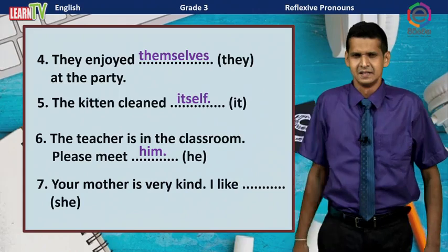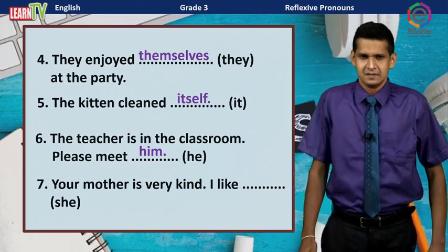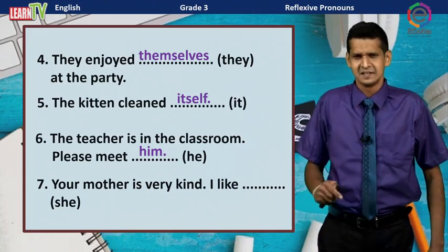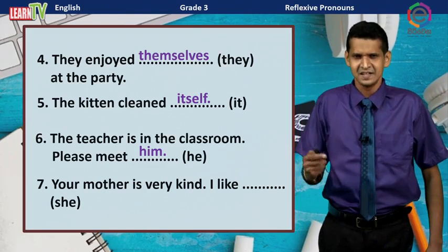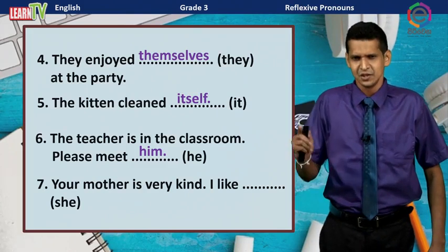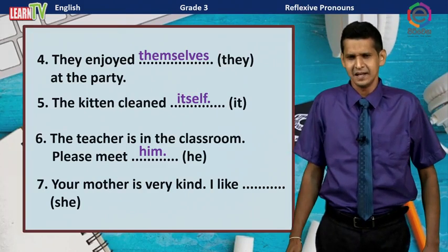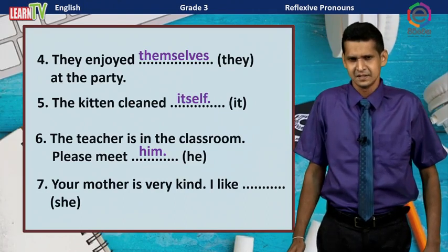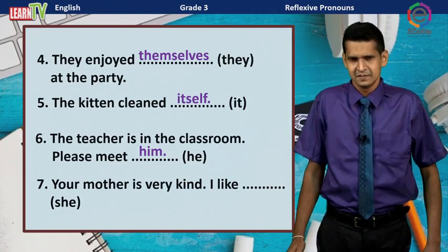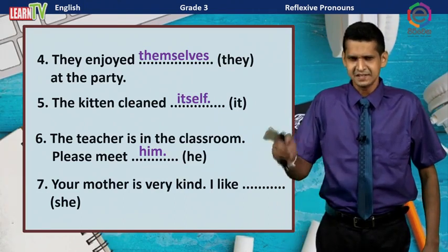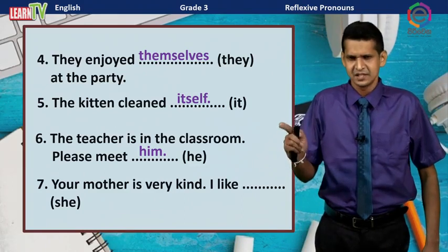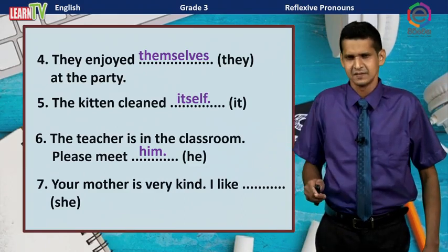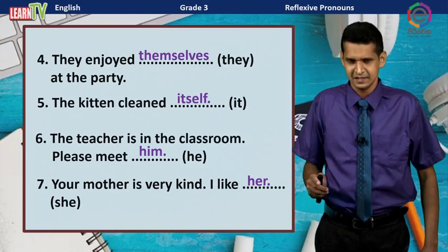Number seven: Your mother is very kind. I like ___. The object pronoun of 'she' is 'her.' The answer is: I like her.